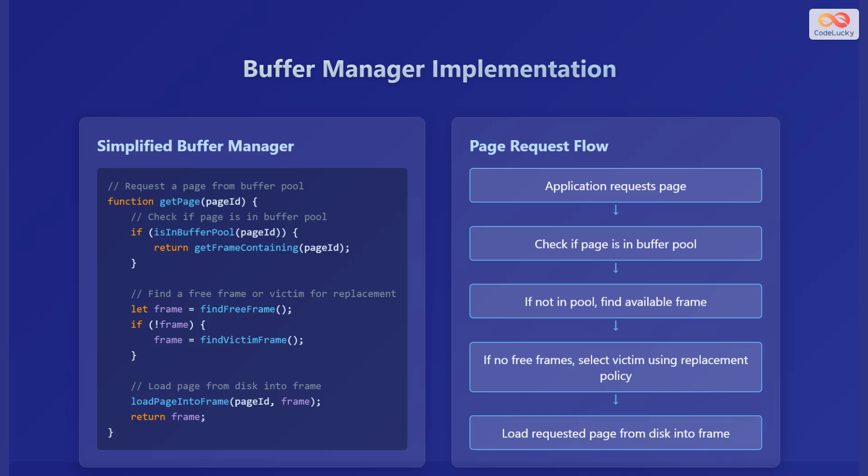If the page isn't in the pool, the buffer manager needs to find a free frame to load the page into. If there are no free frames, it has to choose a victim frame to replace, using a replacement policy which we will discuss later. Finally, the buffer manager loads the requested page from the disk into the chosen frame and returns that frame.